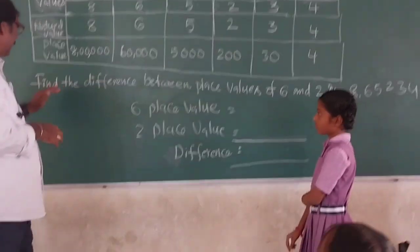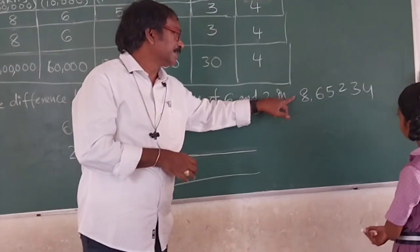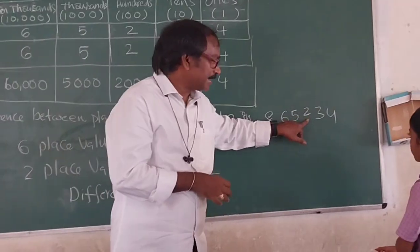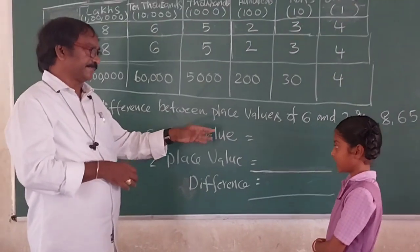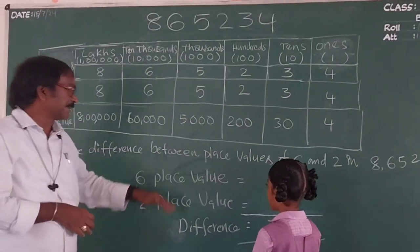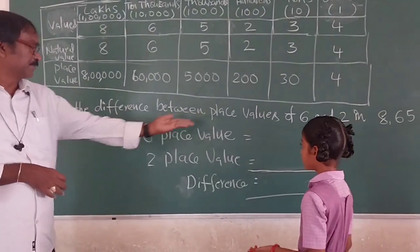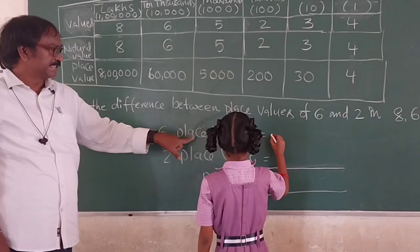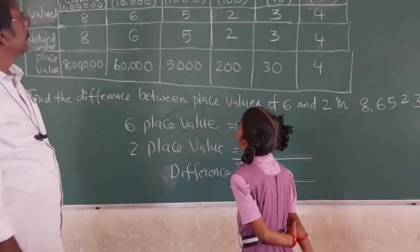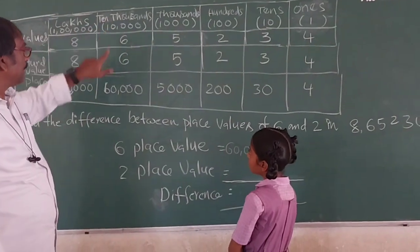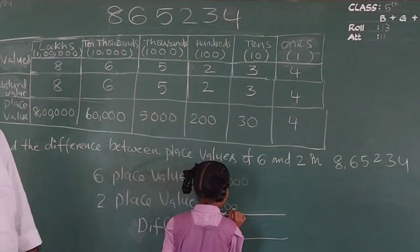Here is one of our problems, A100. Find the difference between place values of 6 and 2 in the given number 8,65,230. The place value of 6 is equal to 60,000. The place value of 2 is equal to 200.